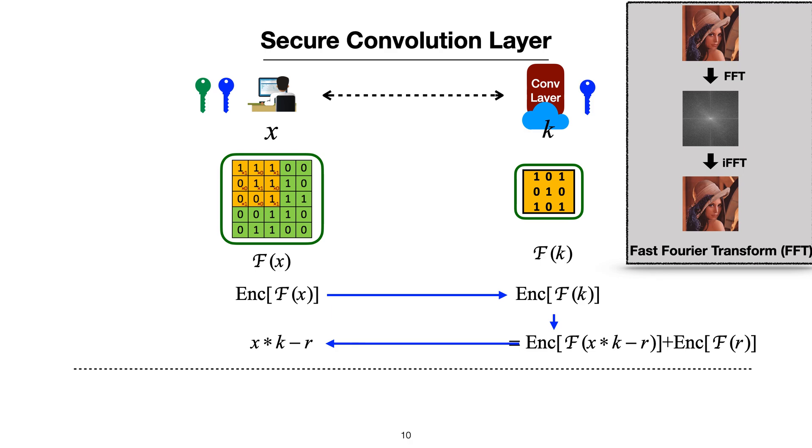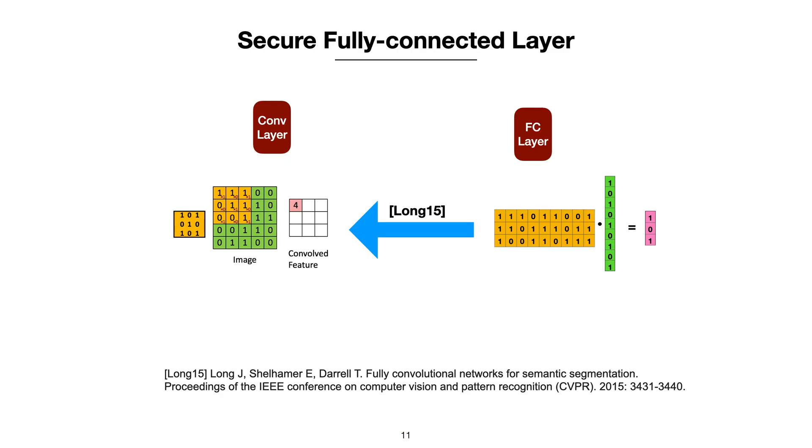At this point, the final result x' is split into two parts. Each party holds one of them. For fully connected layers, we convert it into an equivalent convolutional layer with kernel size equals to 1, so we can use the same method as before to evaluate this layer.